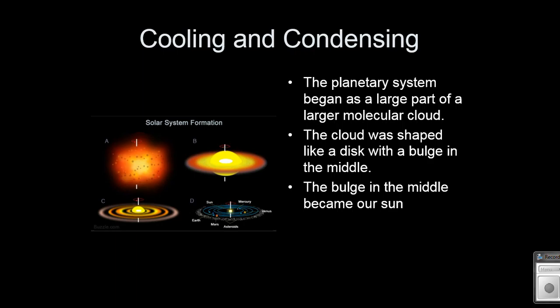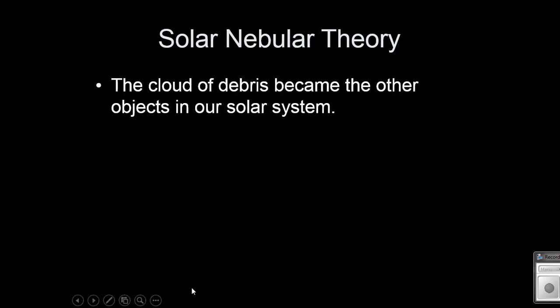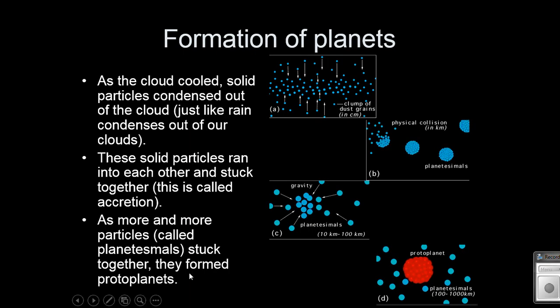So the heavier elements start to get pulled towards the center where the center of gravity is, and that's where it stays the warmest. So only the things that can become a solid at a higher temperature will stay towards the center. And that's how our planets started to become. So all this other stuff out there became our planets.